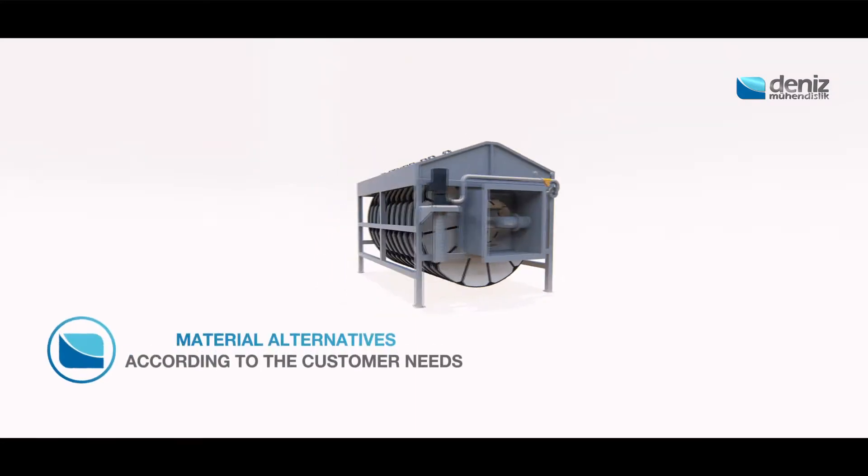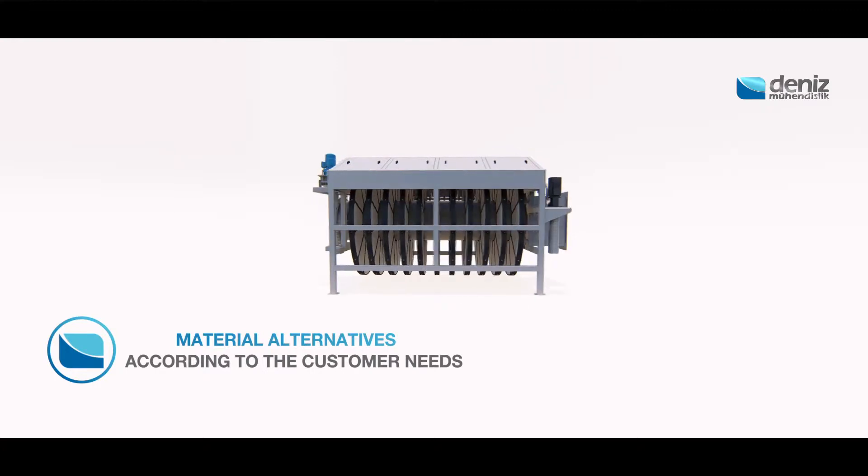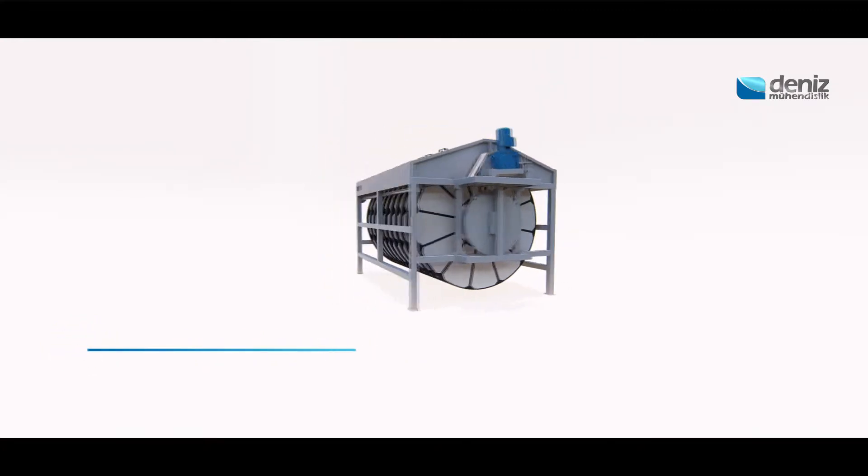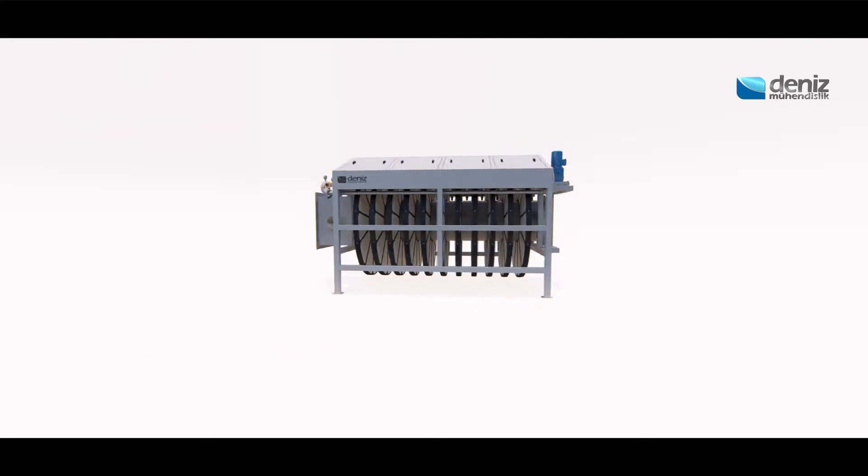The microdisk filter's body is made of stainless steel, discs are made of ABS plastic, and the filter can be made of polyester or stainless steel.